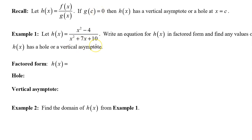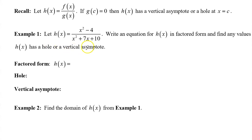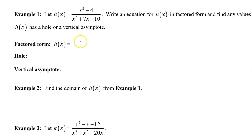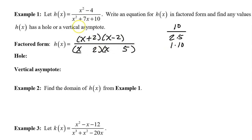let's rewrite this rational function h of x in factored form and find any values of x where h of x has a hole or a vertical asymptote. The numerator is the difference of two squares, so that factors as x plus 2 times x minus 2. The trinomial in the denominator will factor as a binomial times a binomial. x squared is going to be x times x. 10 is either going to factor as 2 times 5 or 1 times 10, but inner plus outer must equal the middle, so probably it will be the 2 times 5. To get a positive 7x, we need a positive 2x and a positive 5x. So there's your factored form.